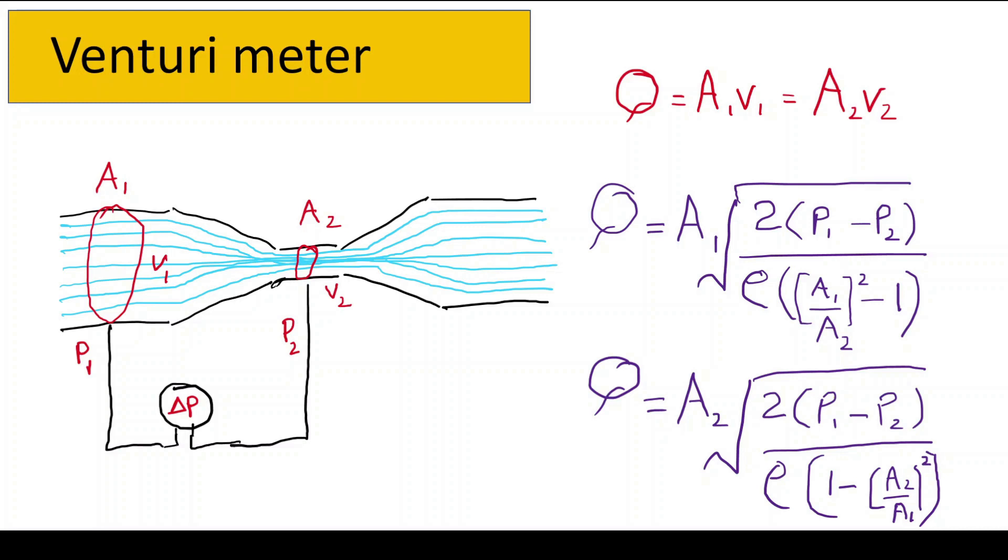Well, venturimeters are commonly used in various industries including chemical process industry, oil and gas, water and wastewater applications where flow rate measurements are crucial for process optimization and control. Here I would like to emphasize that these flow meters are particularly useful for measuring the flow rates of clean liquids or gases. Moreover, they may require calibration or correction factors to account for different flow conditions and fluid properties.